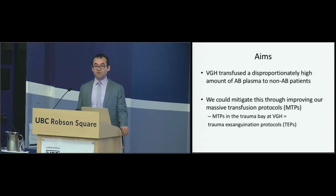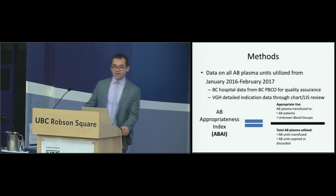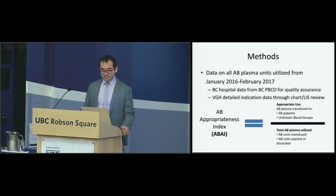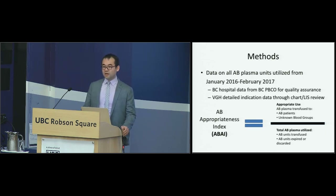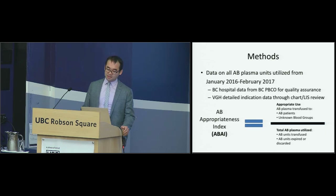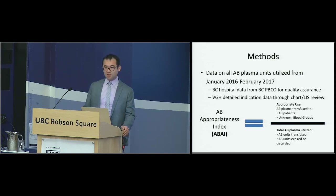Our aims for this quality improvement project were: we hypothesized that Vancouver General Hospital, being a level 1 trauma center in BC, transfused a disproportionately high amount of AB Plasma to non-AB patients, and we thought we could mitigate this through improving our massive transfusion protocols. For reference, the massive transfusion protocol at VGH is called a trauma exsanguination protocol. We collected data on all AB Plasma units utilized from January 2016 to February 2017, taking data from two sources: BC Hospital data from the BC PBCO, and detailed indication data through chart and LIS review at Vancouver General Hospital.